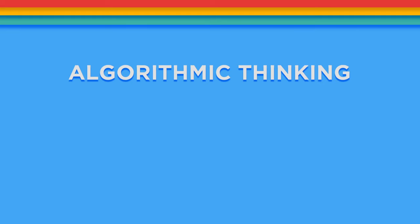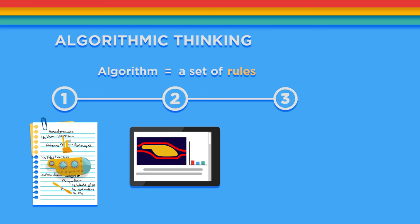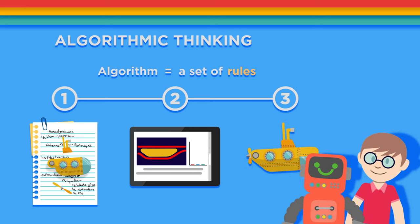Finally, algorithmic thinking. Algorithm is really just a big word for a set of rules. So, algorithmic thinking is basically when you generate a series of simple steps that anyone can follow to solve a problem.